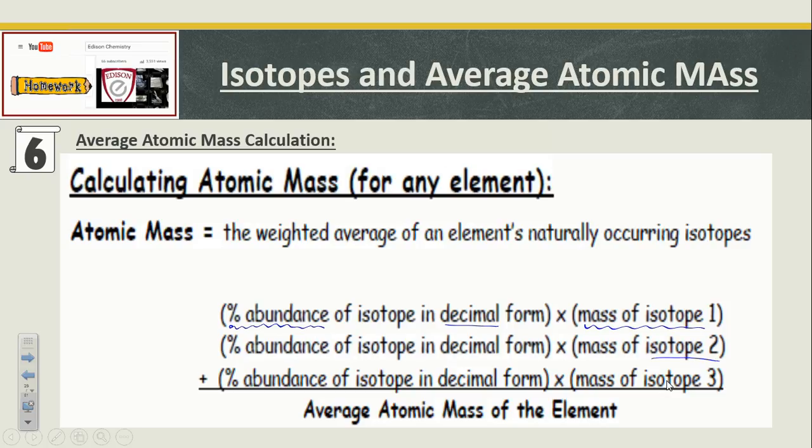This is not the average in the sense that we have three isotopes, I add the three masses and I divide by three. That type of calculation assumes that they're all present in equal quantities. This type of calculation, by multiplying by the percent abundance in decimal form, takes into account that not all isotopes are created in equal quantities.